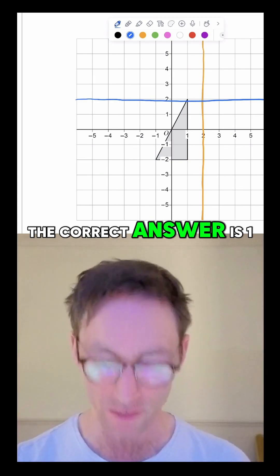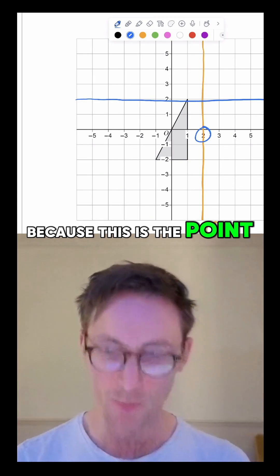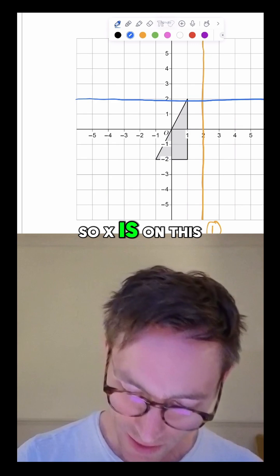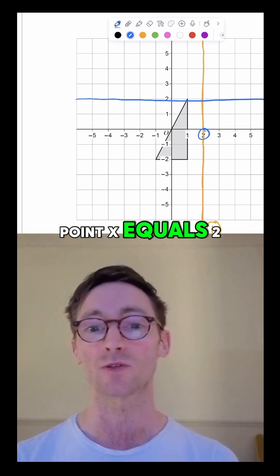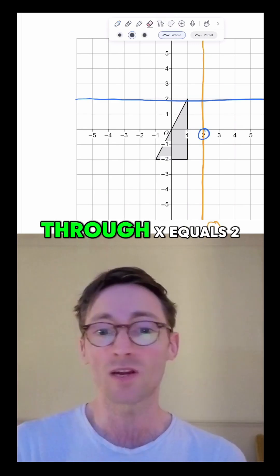The correct answer is 1 because this is the point x equals 2. So x is on this axis and this is the point x equals 2, and so this line goes through x equals 2, so it's that one.